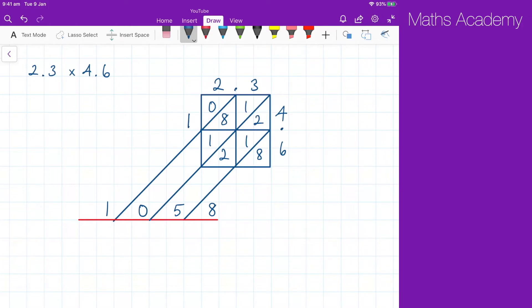Now the last step is to say, well, where does that decimal point go? And this is what students normally struggle with when using a traditional method of multiplying decimals. It's quite easy with this method. We go down from this decimal point. We go across from this decimal point. Where do we meet? There we meet. And we follow it all the way down that diagonal. So we get 10.58.